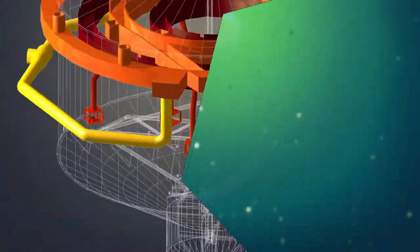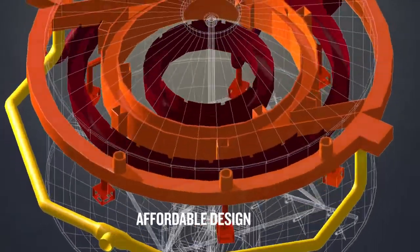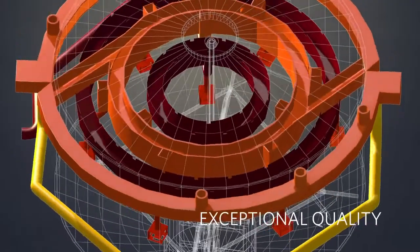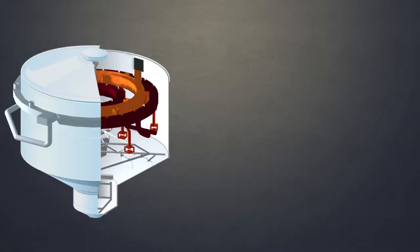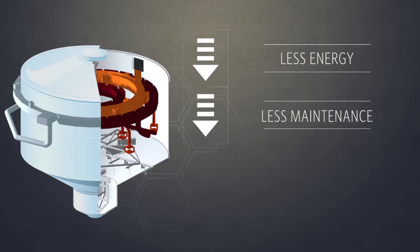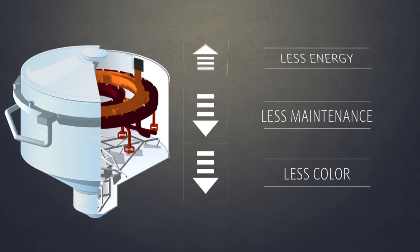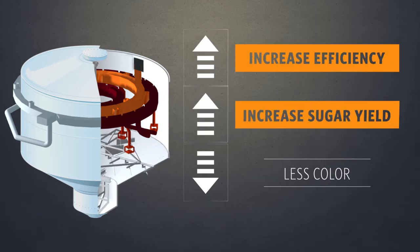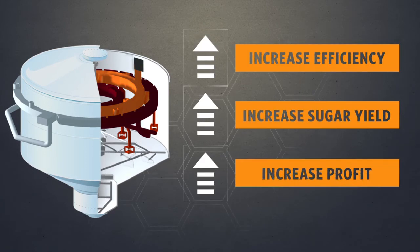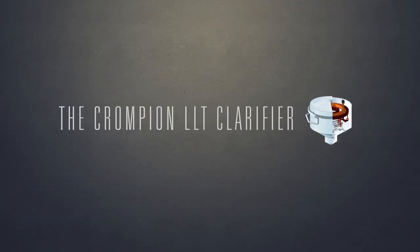The Crompion LLT combines necessity with innovation, affordable design with exceptional quality. An LLT clarifier uses less energy, requires less maintenance, and produces sugar with less color, which will increase efficiency, increase sugar yield, and increase profits. Now that's pretty sweet! Introducing the Crompion LLT clarifier.